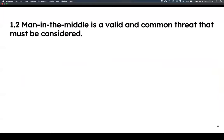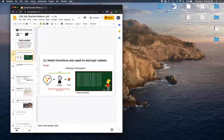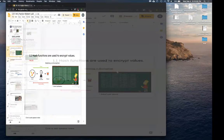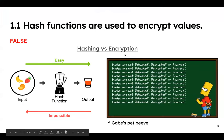The key word here is 'encryption.' Encryption implies that it can be decrypted, which hashes can't. Encryption means you can go both ways — you encrypt a value and there's a key that lets you reverse it.